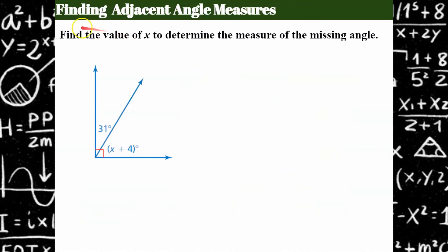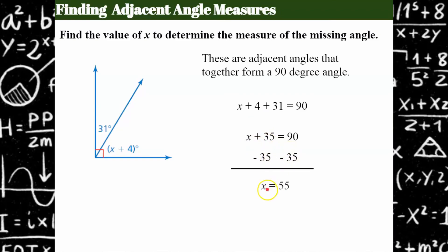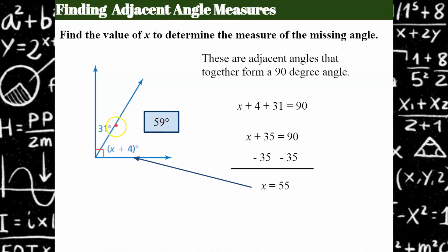Now we're going to find adjacent angle measures using what we know. Here I have two adjacent angles that together form a 90-degree angle, so they will equal 90 degrees together. I can write the equation: x + 4 + 31 = 90 degrees. Combining like terms, 4 + 31 = 35. Subtracting 35 from both sides gives x = 55. Now I can find the angle: 55 + 4 = 59 degrees. I can check: 59 + 31 = 90 degrees. So my missing angle is 59 degrees.